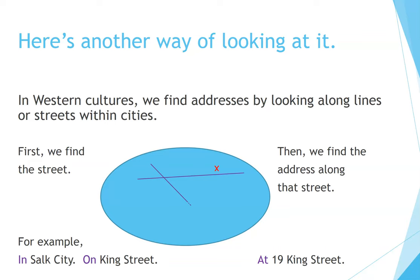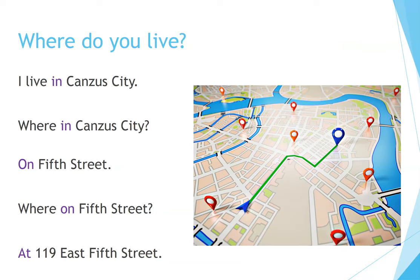Here's another way of looking at it. In Western cultures, we find addresses by looking along lines or streets within cities. The blue is the city, the purple lines are the streets, and the red X is the address. In Salt City, on King Street, at 19 King Street. For example: I live in Kansas City. On 5th Street. At 119 East 5th Street.